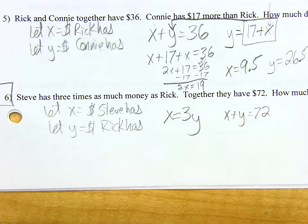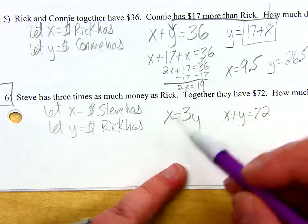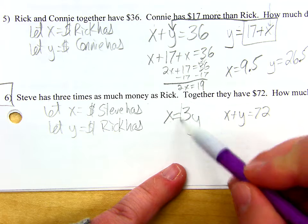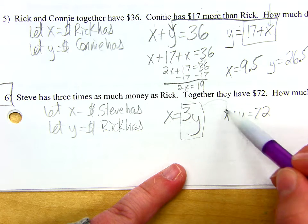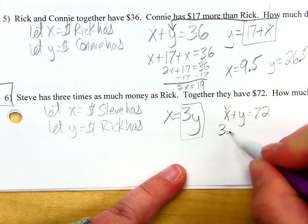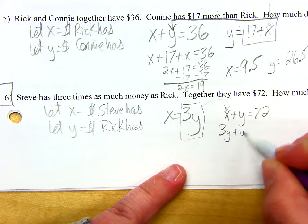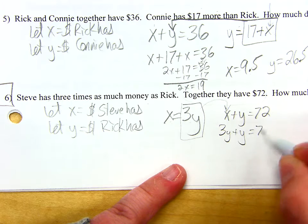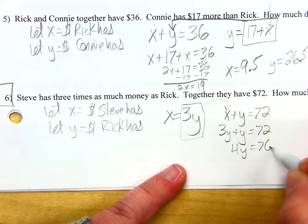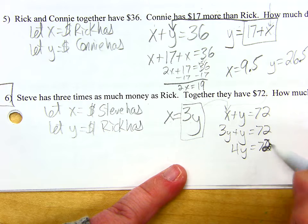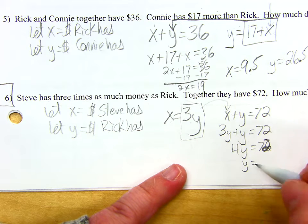If I'm going to solve this one, I would certainly do substitution because it's already set up for me. I have X equal to 3Y, so I'm just going to pop a 3Y in for X over here. 3Y plus Y equals 72. 4Y equals 72. Divide both sides by 4, you get 18.